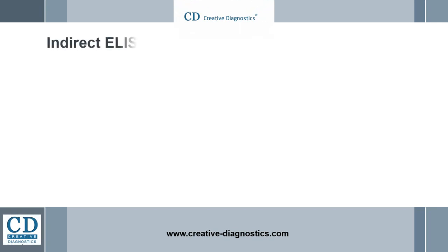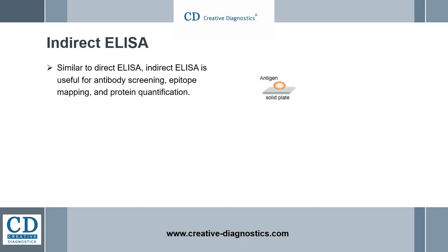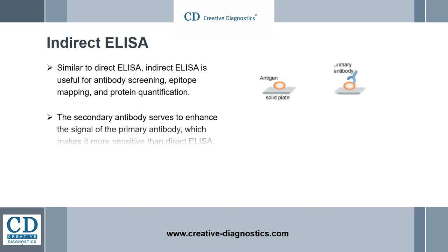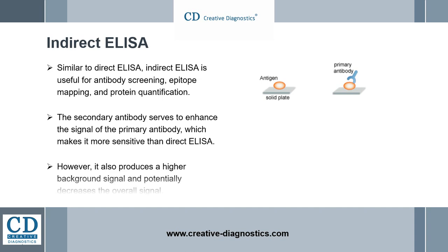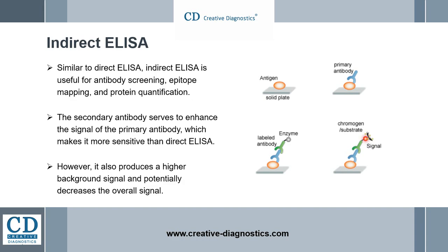Indirect ELISA. Antigen is passively attached to wells by incubation. After washing, antibodies specific for the antigen are incubated with the antigen. Wells are washed, and all bound antibodies are detected by the addition of anti-species antibodies covalently linked to an enzyme. Such antibodies are specific for the species in which the first antibody was produced. After incubation and washing, the test is developed and can be read as described.